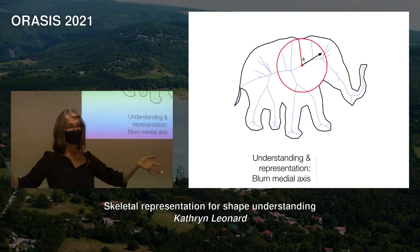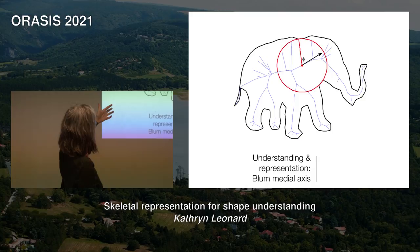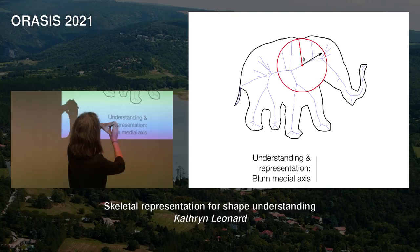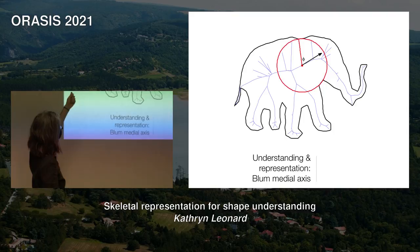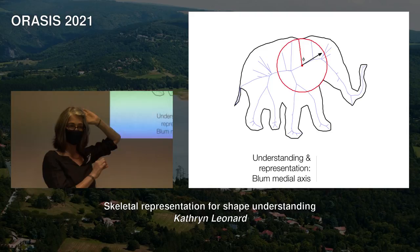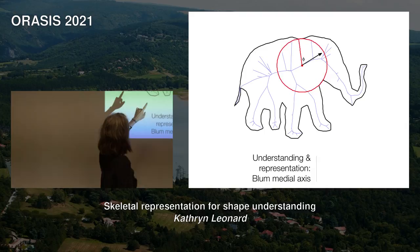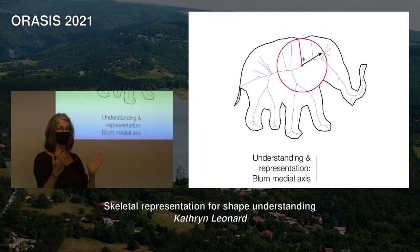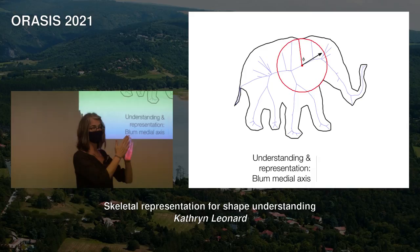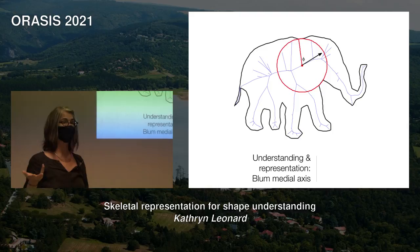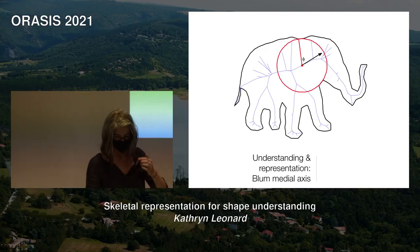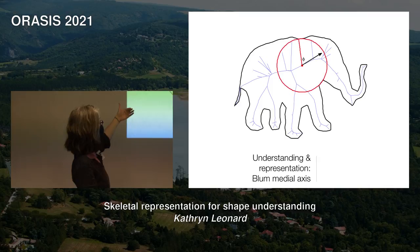A skeletal model — one of the most common ones is the Blum medial axis — is obtained by blowing up maximal circles inside the shape and tracing out the centers of those circles, giving branch-like pieces. You also store the radius of each circle. Here's the medial axis of the elephant. If I take a point on the medial axis and look around it, I know how my part is curving, and from the radius information I also know how fat or skinny it is, and if it's getting fatter or skinnier. I suddenly have much more global information locally than other representations.